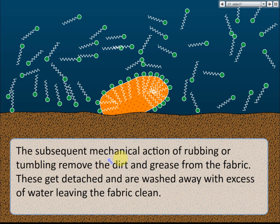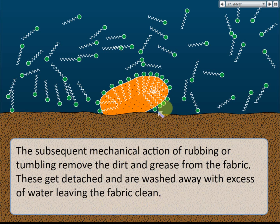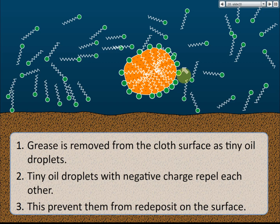The subsequent mechanical action of rubbing or tumbling removes the dirt. When you rub the cloth, the soap ions dissolve more and more into the grease. This detaches the dirt, which is washed away with excess water, leaving the fabric clean. Slowly the grease is removed from the surface of the fabric until it is completely gone.